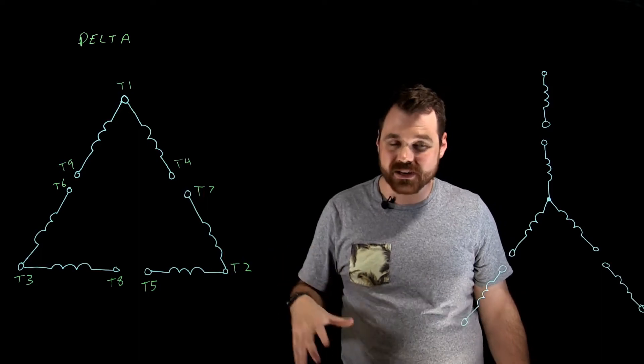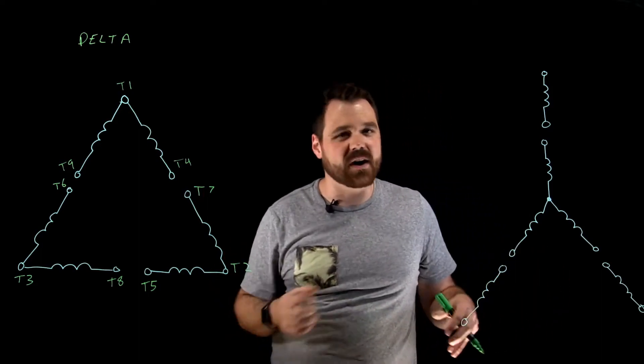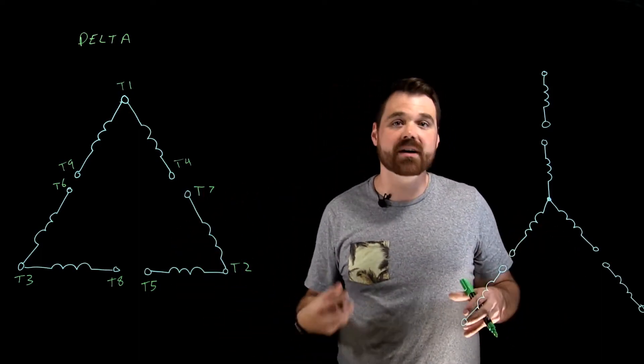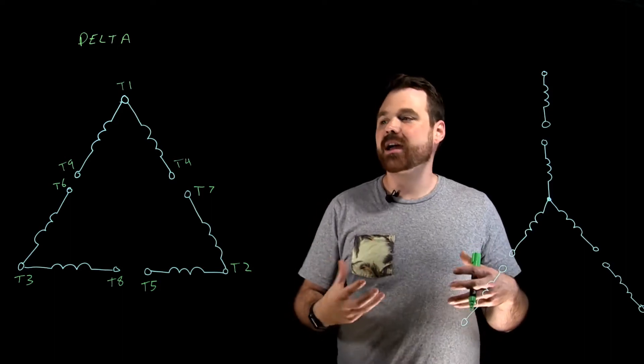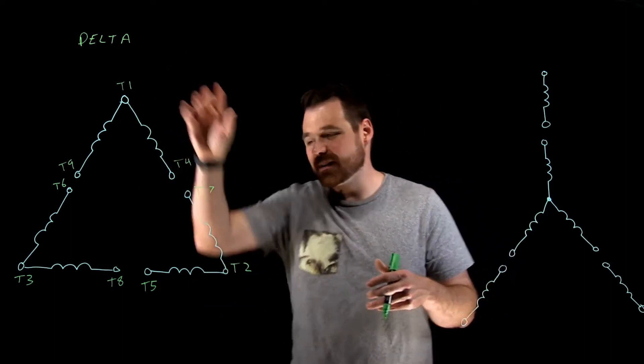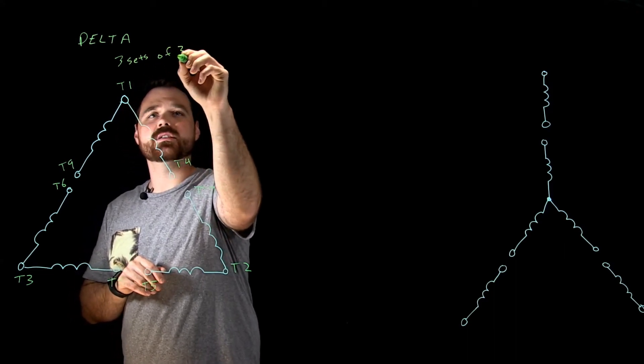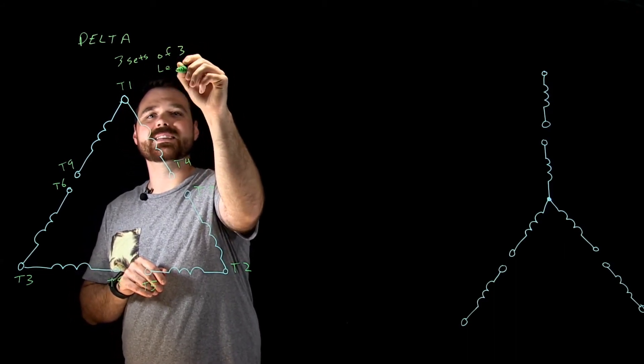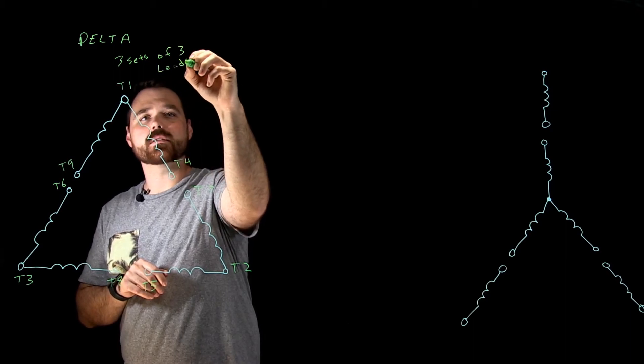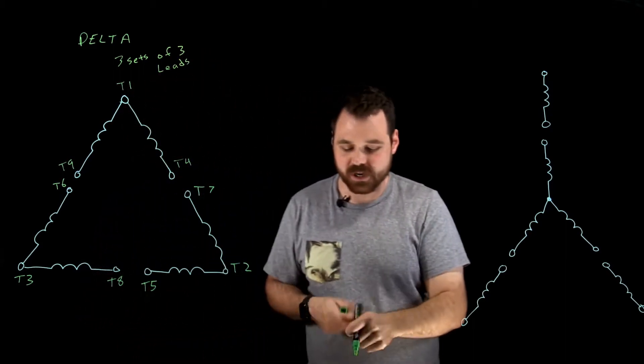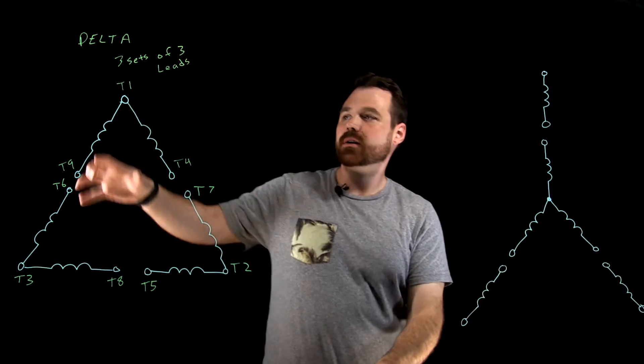Again, six different windings. And the way I would identify this, if I didn't know if it was wired delta, I could use a multimeter and I could just do an ohmic test. And my delta motor is three sets of three leads. Three sets of three, I'm going to get continuity.